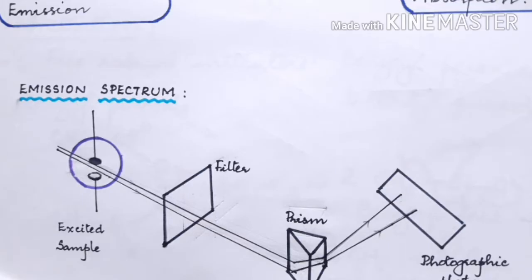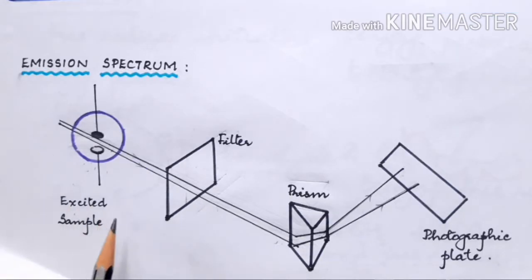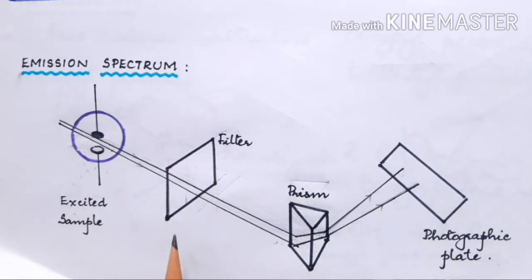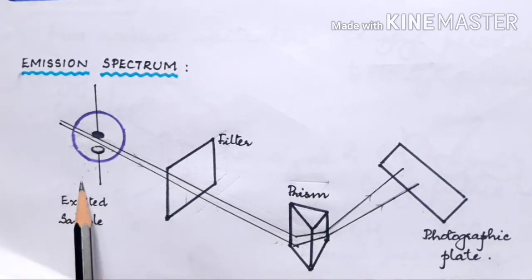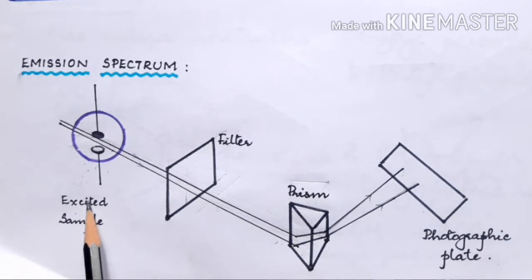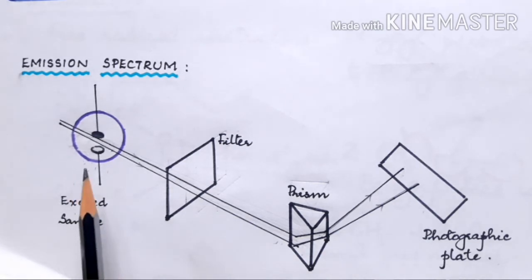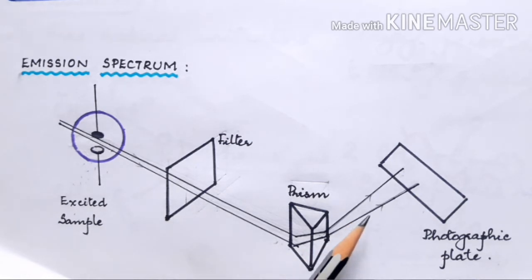This is the experimental setup for emission spectrum. It consists of a sample and a spectroscope. A spectroscope essentially consists of a prism and a photographic plate. The sample to be checked is kept in front of the spectroscope in the excited state, meaning the sample is irradiated with either white light or heat.